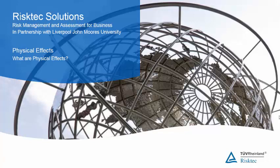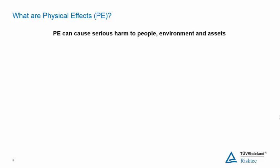This session provides an overview of the types of physical effects from accidents on oil and gas and chemical facilities. Physical effects can potentially cause serious harm to people through injuries and fatalities, to the environment through short and long term land, air or water contamination, as well as to assets through damage to equipment which can cause the event to escalate in size, with subsequent consequences such as prolonged shutdown and loss of production.